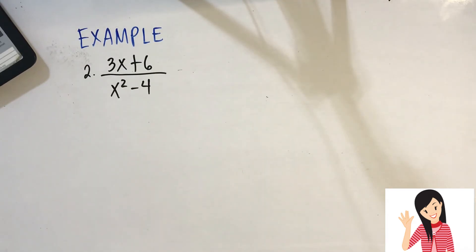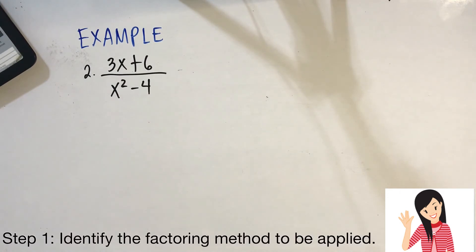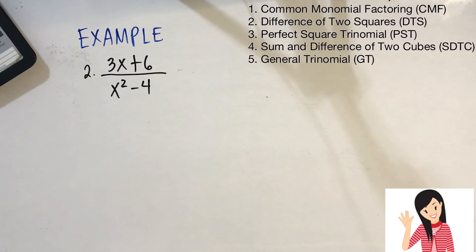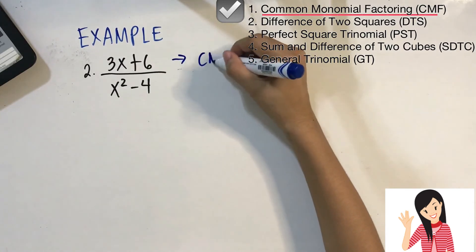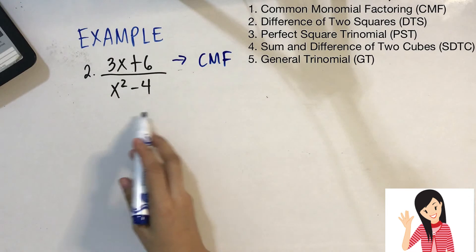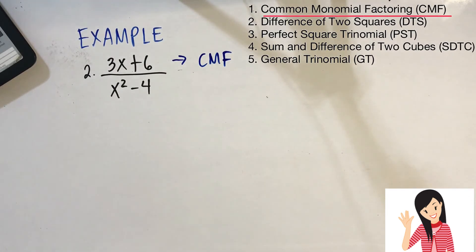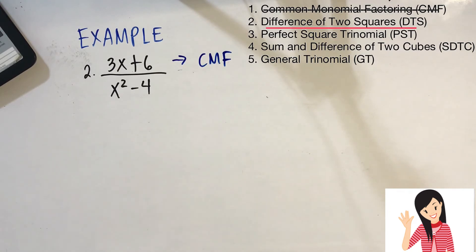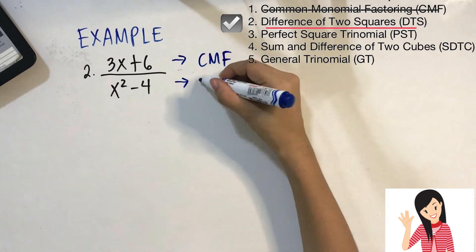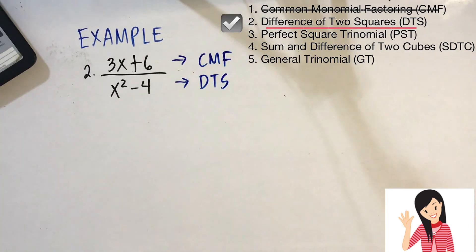Example number 2: (3x + 6) over (x² − 4). First step — identify the factoring method. For the numerator 3x + 6, we apply common monomial factoring. For the denominator x² − 4, common monomial factoring does not apply since x² and 4 have no common factor. However, difference of two squares applies here since both terms are perfect squares and the operation is subtraction.